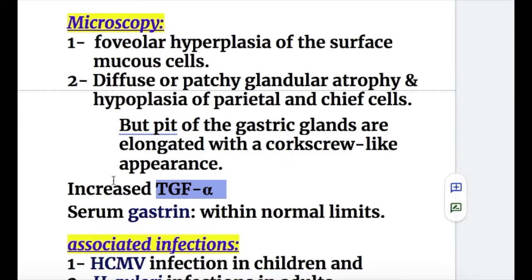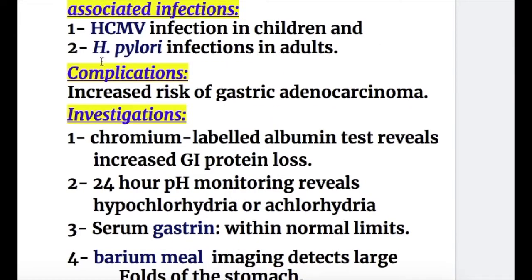The serum gastrin level is within normal limits despite achlorhydria. Associated infections with Menetrier's disease are cytomegalovirus in children and H. pylori infections in adults.